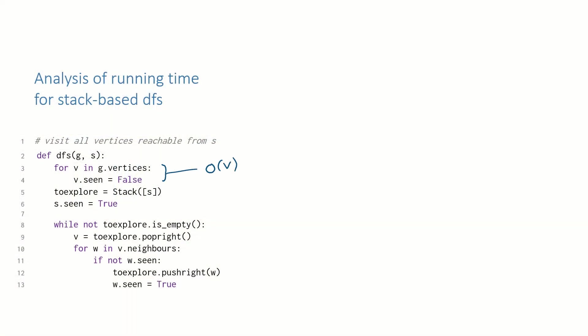This initial loop loops over every vertex, so it takes big O of V. Then we have a couple of lines that are run once, big O of 1. Next, we have this while loop. The while test is run for every vertex that we visit, and our seen flag ensures that we visit each vertex at most once, so lines 8 and 9 are big O of V. And then lines 10 to 13 are run for every edge out of every vertex we visit, and there are E edges in total, so they are run O of E times. This gives us total running time big O of V plus E.